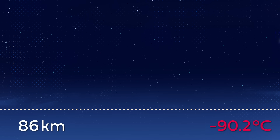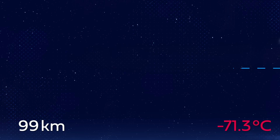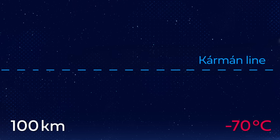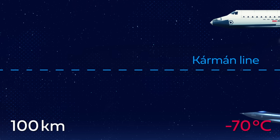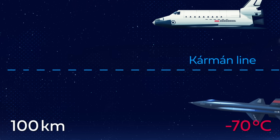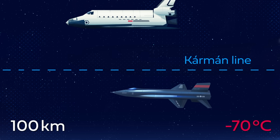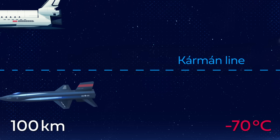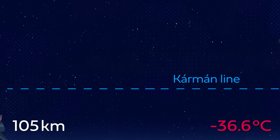Continuing upwards, just above we cross the Kármán line — the most commonly used definition of the start of space — 100 kilometers above the Earth's surface. There's nothing particularly special that happens here; it's just a nice round number, and it has technical significance for aeronautics. Below this height you can fly a plane without being in orbit around the Earth, while above it you must be in orbit. Below the Kármán line you do aeronautics; above it you do astronautics.